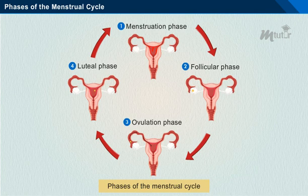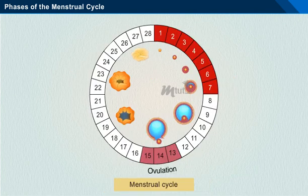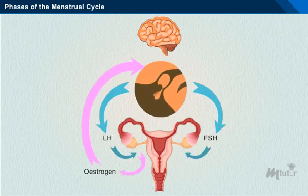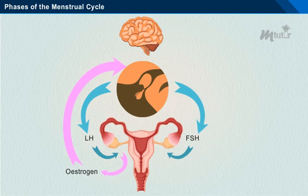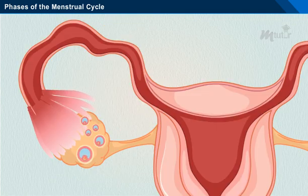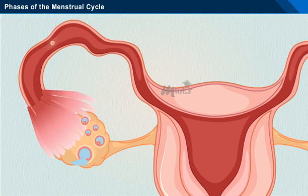The ovulation phase is the shortest phase and occurs around the 14th day of the menstrual cycle. During ovulation, the increased estrogen levels — that is, majorly estradiol — trigger a sharp rise in luteinizing hormone (LH) from the pituitary gland. The rapid secretion of LH reaches its maximum level, causing the LH surge. The peak level of LH induces the rupture of the Graafian follicle, thereby causing the release of the ovum.